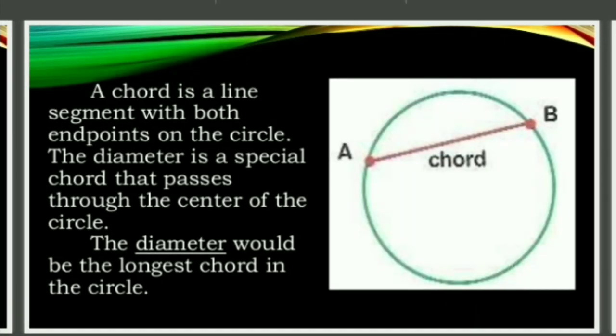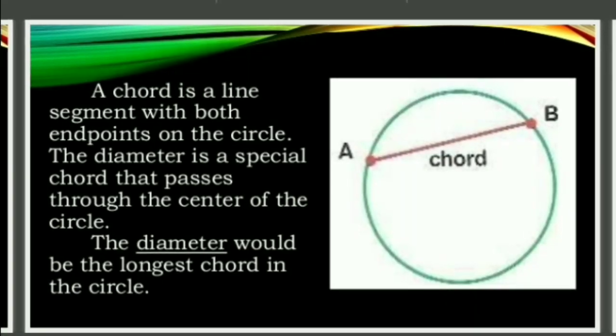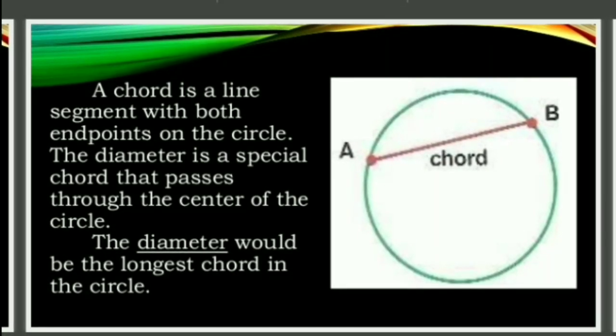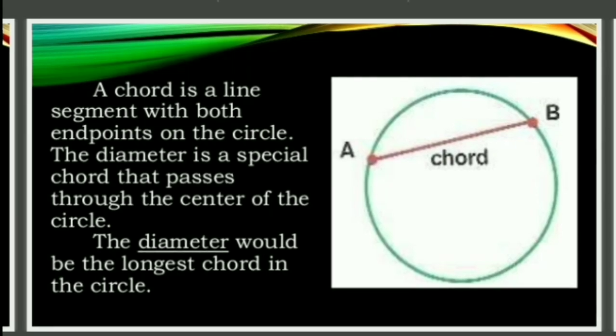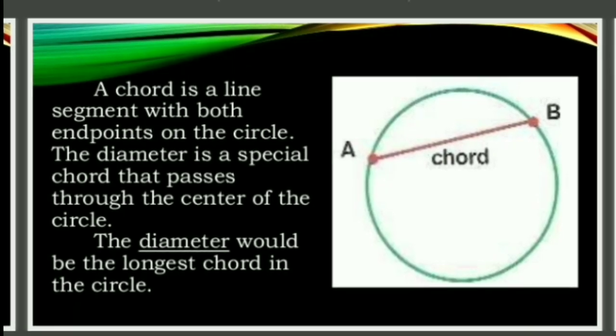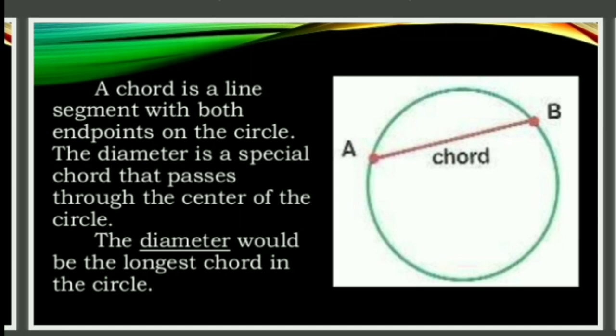Chord: A chord is a line segment with both endpoints on the circle. The diameter is a special chord that passes through the center of the circle. The diameter would be the longest chord in the circle.